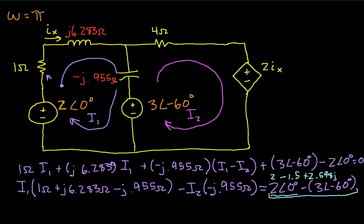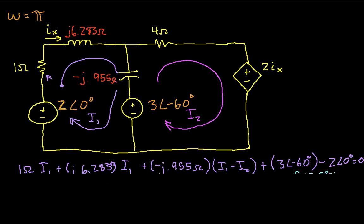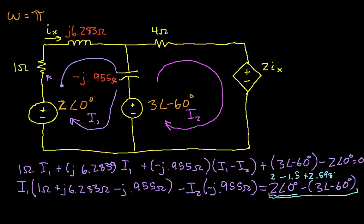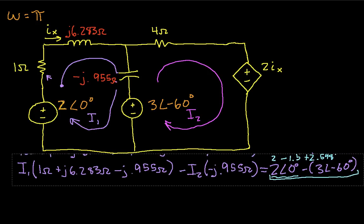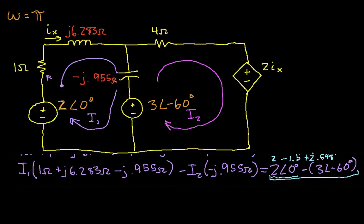So we go back to our equation and we have then 2 minus 1.5 plus 2.598 j. So again, we're doing this because it will make it easier to plug it into Wolfram Alpha in just a minute. So let's take this equation and move it up here. We'll remember that this is the equation we got from loop 1. Let's look at loop 2.